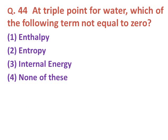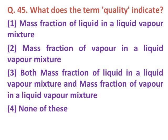Question forty-four: At the triple point of water, which of the following terms is not equal to zero? Option one: enthalpy. Option two: entropy. Option three: internal energy. Option four: none of these. The correct answer is option one — enthalpy cannot be zero at the triple point of water, but entropy and internal energy will be zero.